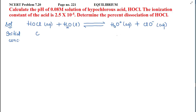Initially there is no dissociation. Hydronium ions are zero moles and ClO⁻ negative is also zero moles. When the equilibrium state is attained, alpha moles of hypochlorous acid dissociate into H⁺ and ClO⁻ negative ions.